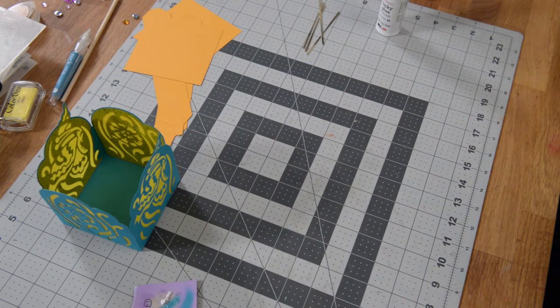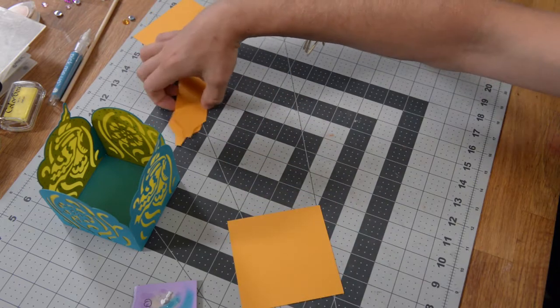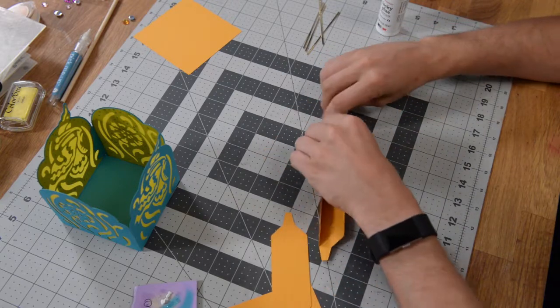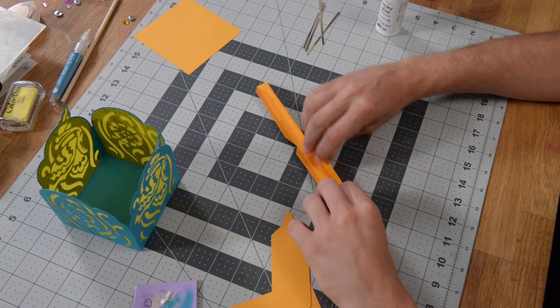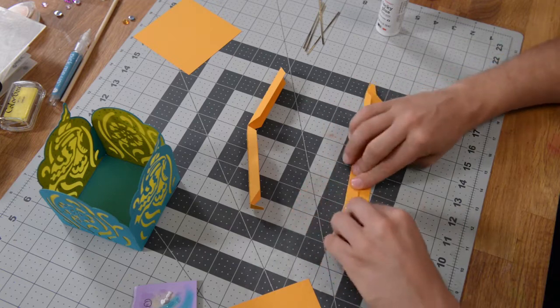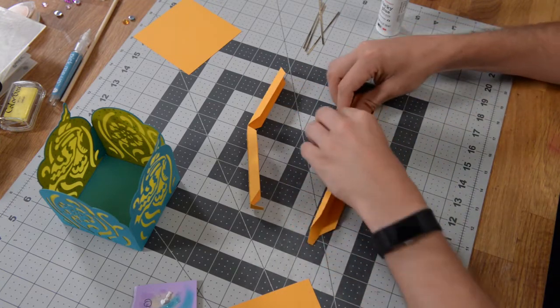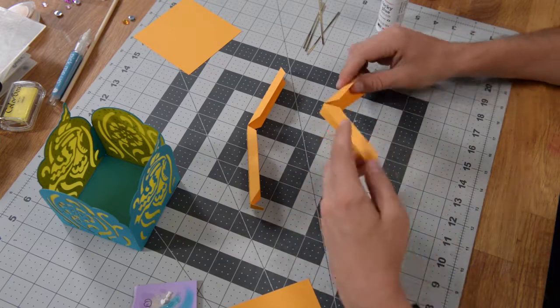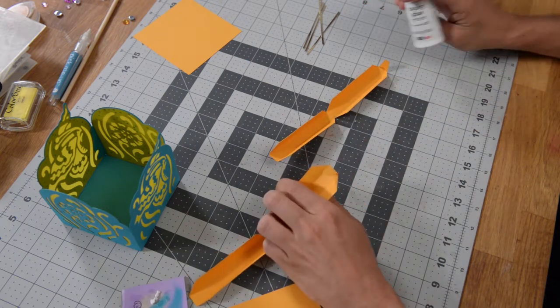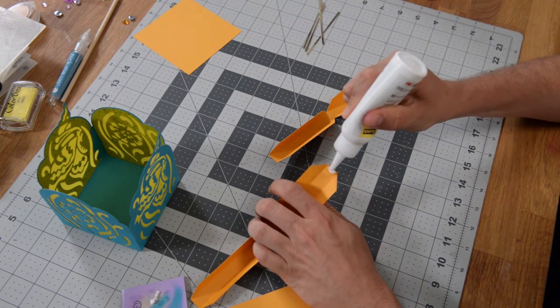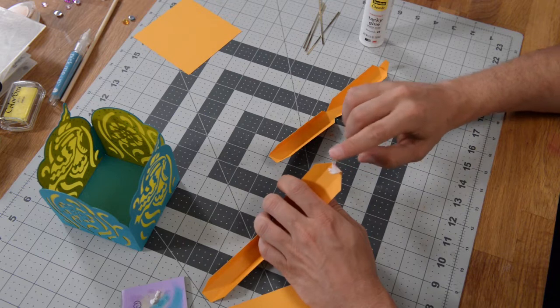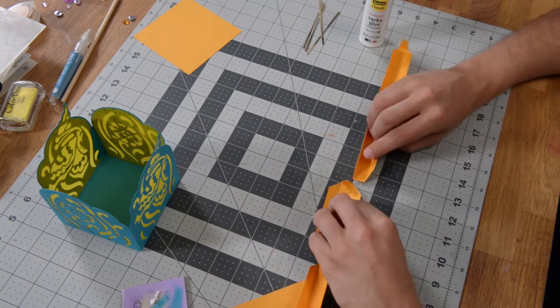Then we're going to put glue on the bottom of this and put it on our base once we have the base constructed, which we can go ahead and do now. This is pretty straightforward, pretty simple. First thing you want to do is just make sure that you fold everything at the score marks here. We're going to join these two pieces together. The first thing I want to do is put glue on this tab here and cover that whole tab as best as you can. Get that glue out to the edge.